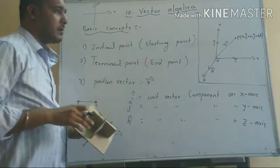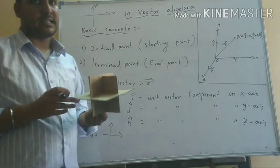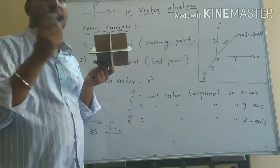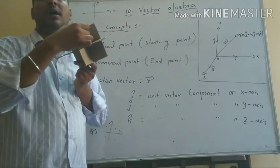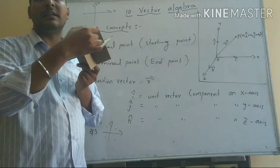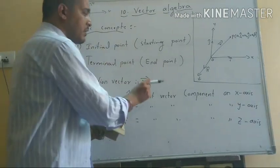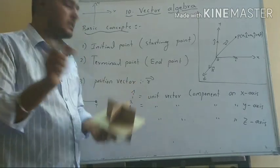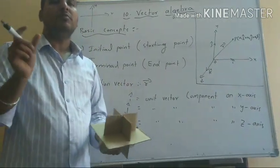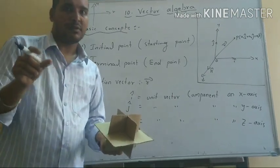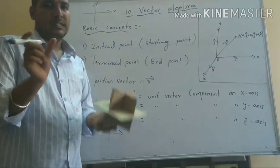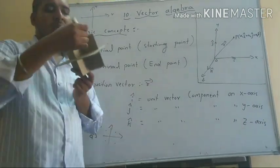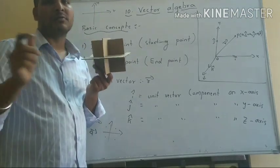Here we go. First, I is the unit vector component on the x-axis. This is the x-axis. The component goes 0, 1, 2, 3. The 1 is the top of the unit — this is the length of one unit, one magnitude. A unit vector is a vector whose magnitude is 1; it is called a unit vector. That magnitude is 1. This is the unit vector, and it is the component of the x-axis.